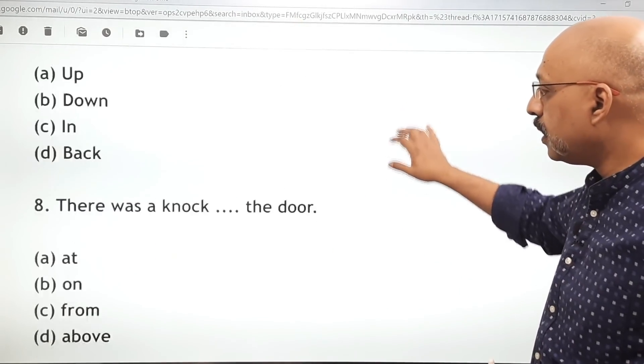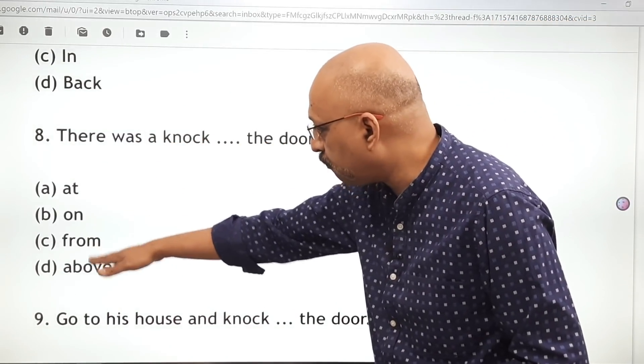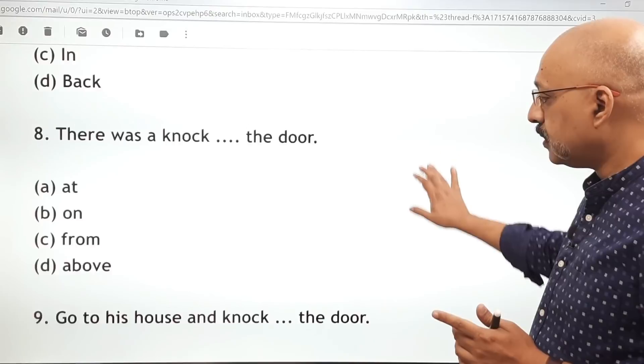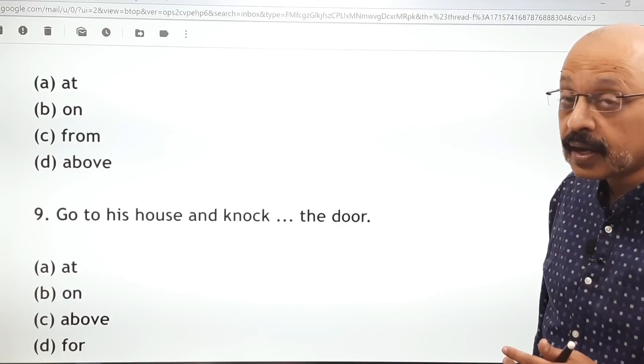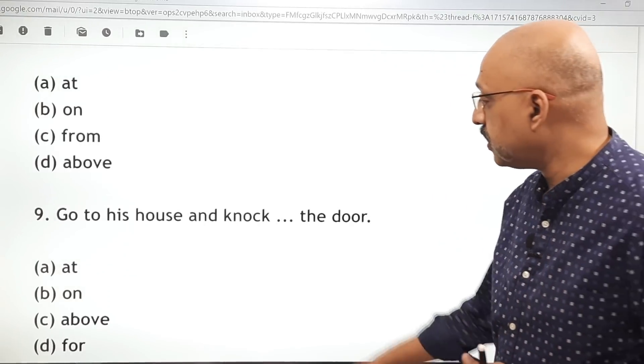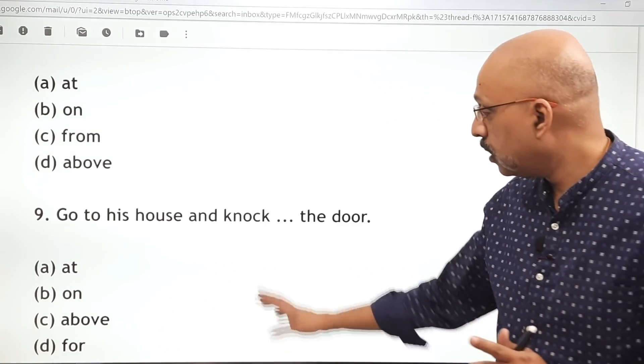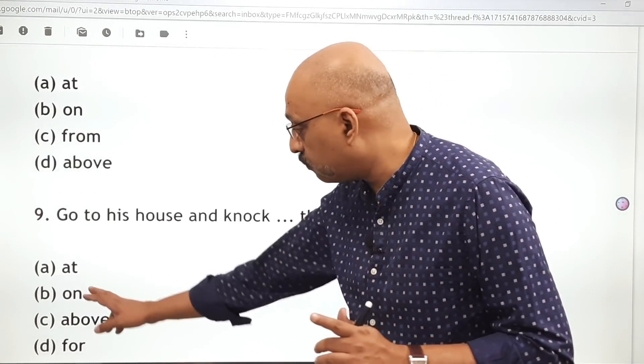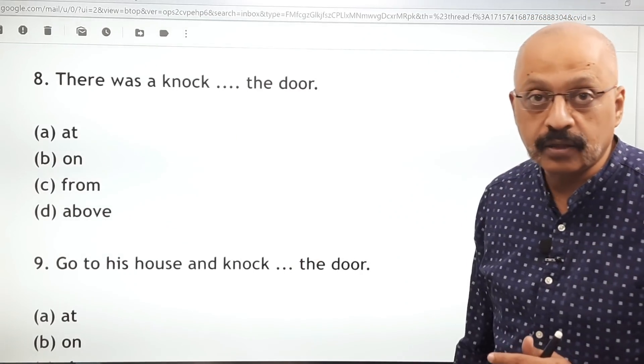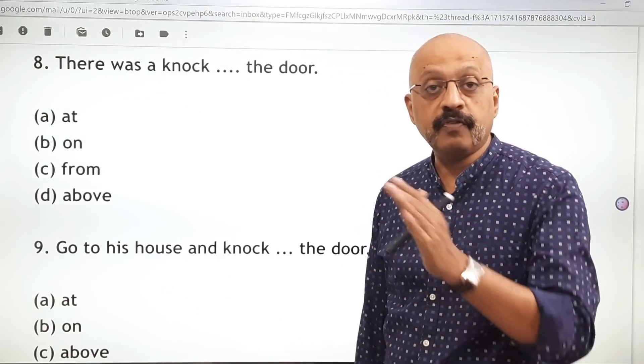Now this one gets a lot of people confused. There was a knock dash the door. At, on, from, above? The correct answer is at. The second one: go to his house and knock dash the door. Same: at, on, above, for? Which one? The answer here will be on. The difference is when knock is being used as a verb, it will be on. When knock is used as a noun, it will be at. There was a knock at the door. Go and knock on the door.